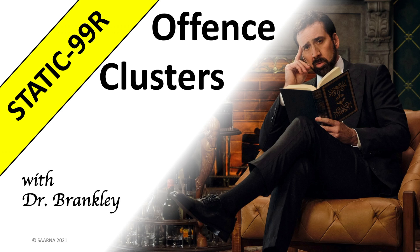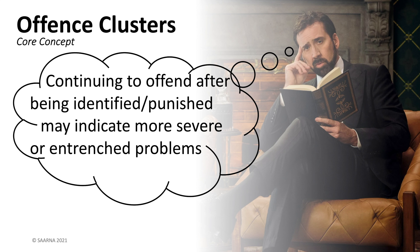Stay till the end of this video and you'll see what happened to the research assistant who helped me collect materials on Mr. Cage. The core concept of this video is about being able to determine if someone continued to offend after being convicted and sanctioned for an offense. Persistent offending likely indicates serious or entrenched problems.